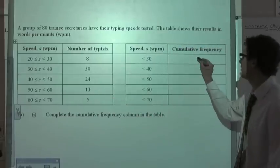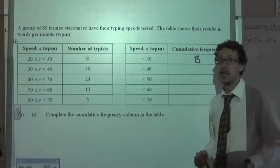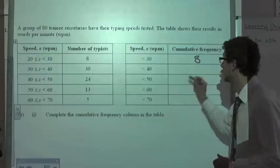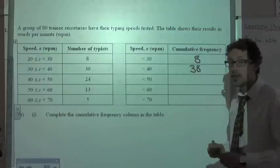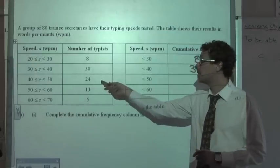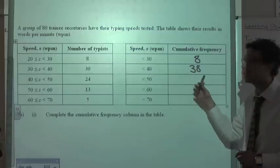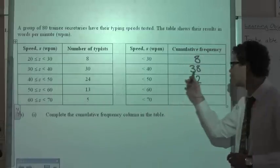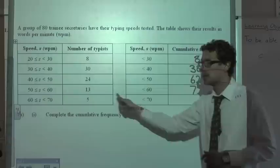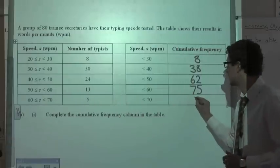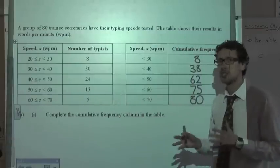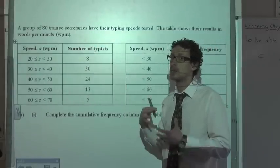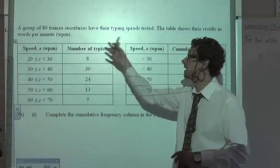We always start with the first value, which is 8 itself. I then need to accumulate — add the next value to the 8, which is 30, giving 38. I then add the next value, 24, to my 38, to give 62. Then add the next one to give 75, and finally add the 5 to give the last value, which is 80. Just to check: your last value should always equal the total amount of data — in this case, the 80 secretaries.